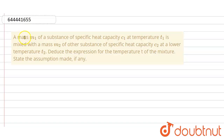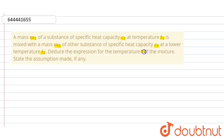Hello everyone. In this question, a mass M1 of a substance of specific heat capacity C1 at temperature T1 is mixed with mass M2 of another substance of specific heat capacity C2 at lower temperature T2. We have to deduce the expression for the temperature T of the mixture, and state the assumptions made, if any.